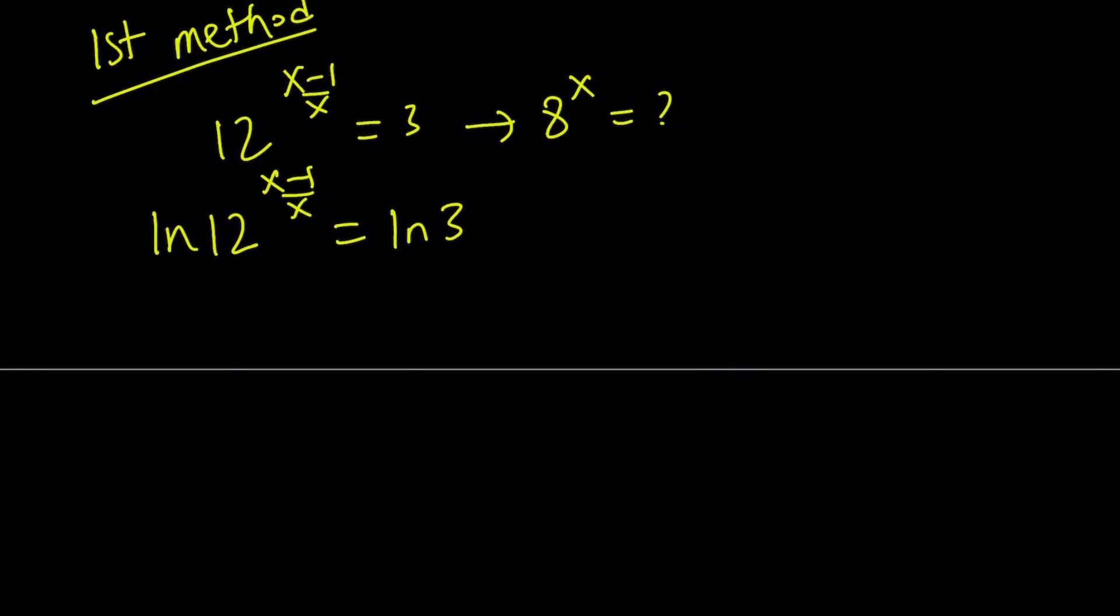So now one of the nicest things about logs is we have this power property. We can move this to the front and write this as x minus 1 over x times ln 12 equals ln 3. This gives us an equation in x because ln 12 and ln 3 are constants. We can solve for x.